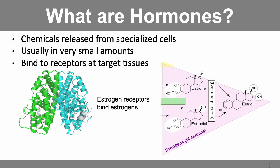Third, hormones bind to receptors at target tissues. Hormones would have no effect on physiology, development, or behavior if they did not have receptors to bind to. An example pictured here is the estrogen receptor, which binds estrogens — the three primary ones being estradiol, estriol, and estrone, collectively known as estrogens. All hormones bind to some kind of receptor protein, and depending on the type of receptor, hormones can induce a variety of cellular, molecular, and transcriptional changes.